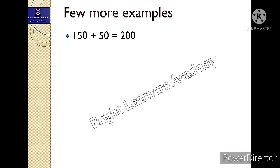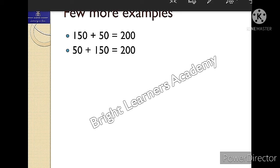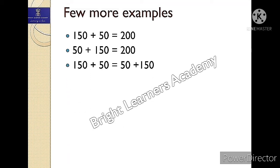Let's take a few more examples. Suppose 150 plus 50 is 200 — that you know. Now if I change the order and do 50 plus 150, the answer is still 200. So it doesn't matter the order; I can add any number first. This is the commutative property, so I can say 150 plus 50 is equals to 50 plus 150.